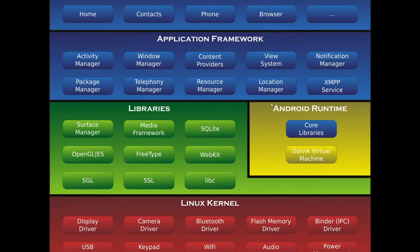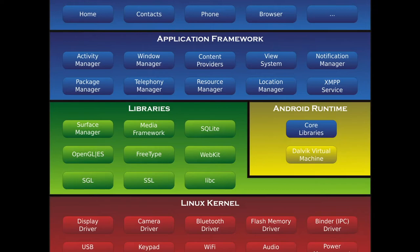On top of the libraries we have the Android Runtime, or ART, which consists of two major components. The first is core libraries, which contain all the necessary Java and Kotlin libraries — these are stored under ART, not under the libraries layer. The second component is the virtual machine: every application runs in its own separate sandbox virtual machine, known as the Dalvik Virtual Machine, or DVM, also called Android Runtime.